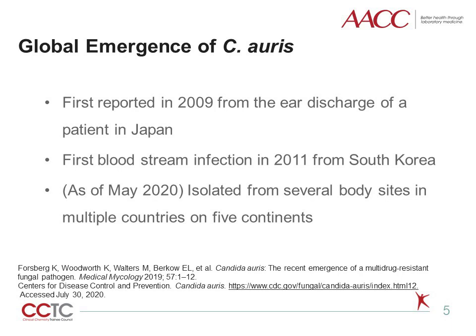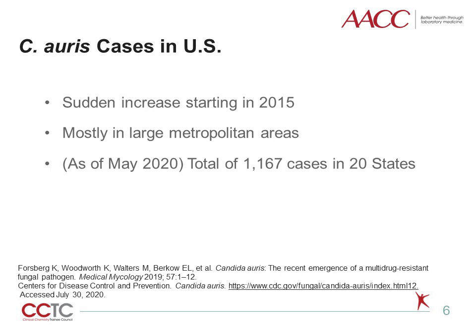In South America between 2012 and 2013, C. auris was the sixth most common cause of bloodstream infections. In India, a study covering 27 intensive care units in 2011 and 2012 reported C. auris as the fifth most common species isolated from patients with ICU-onset candidemia. In London, the prevalence of the organism is now about 0.04% in cardiac thoracic centers. The U.S. was also among the countries that C. auris has infiltrated, with a sudden increase in cases starting in 2015.